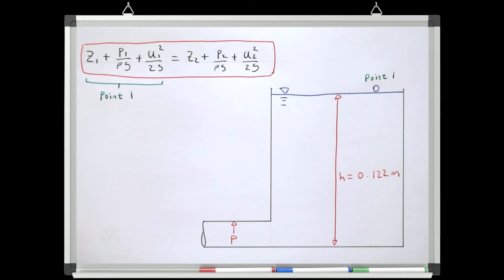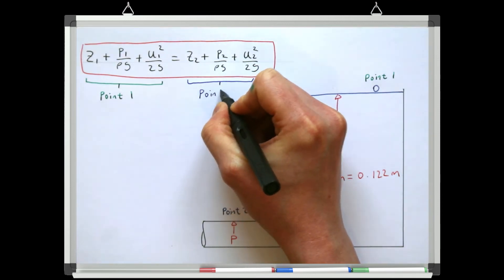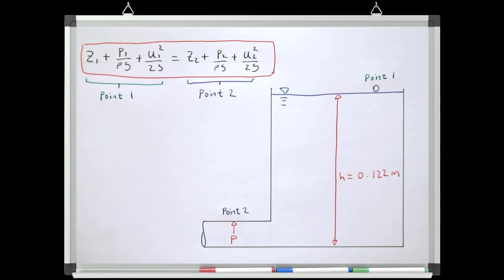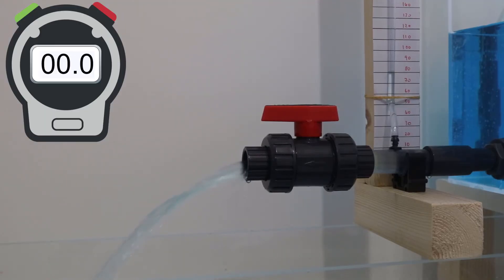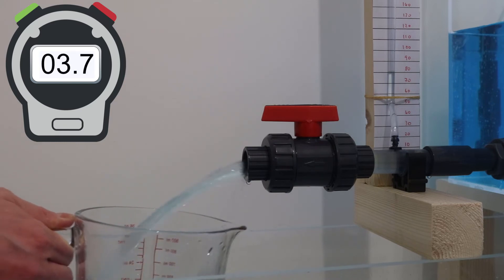Because we're trying to work out the pressure at a specific point in the system, we have no choice but for that to be point number two. At the water surface of the tank, pressure is zero because there's no water above that point pushing down, and velocity can be assumed as zero, as even if the water surface is moving, that velocity is negligible compared to the velocity of water in the pipe. At the point where we want to calculate pressure, elevation is zero as the pipe is at the base of the system, but we have two unknowns: velocity and pressure. We can get the velocity by measuring the discharge using the volumetric method and then using the continuity equation.